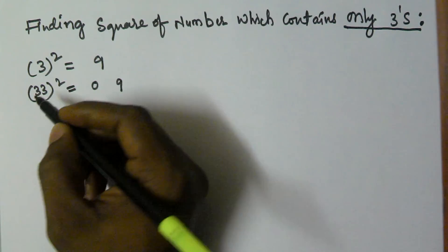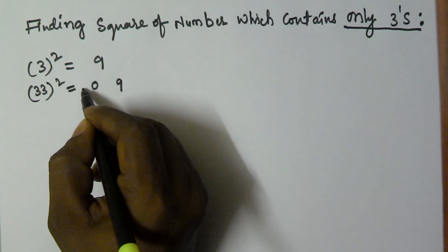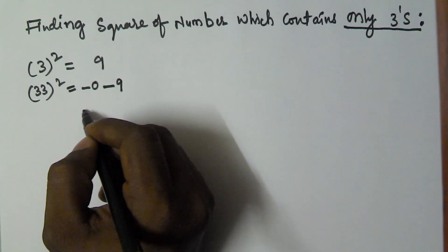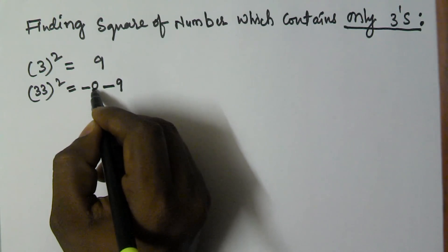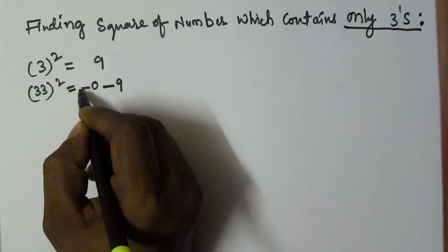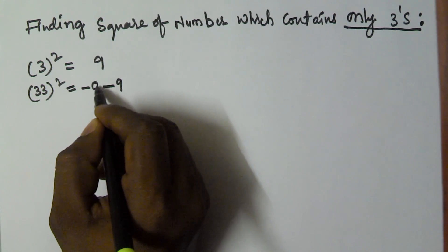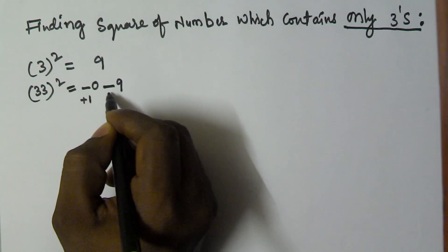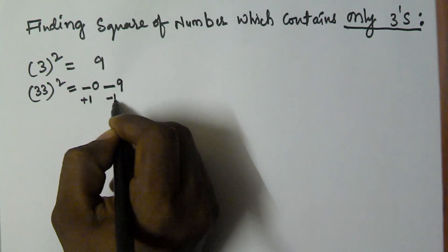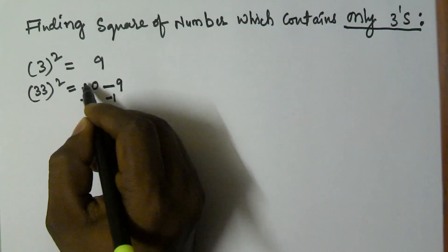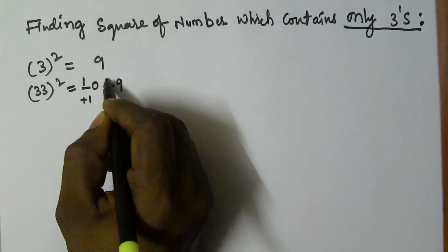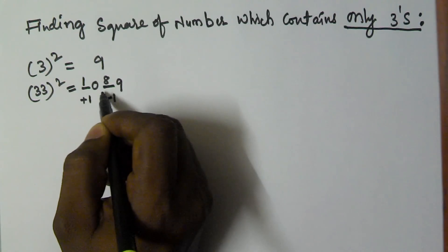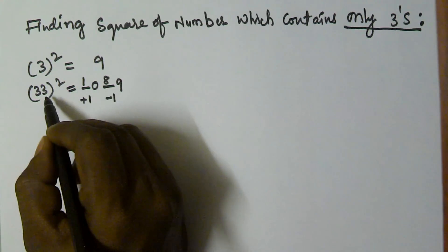It contains 2 digits, that's why we put 2 digits — 1 space before and 1 space after. In the first space increase the value by plus 1, and in the last space decrease the value by minus 1. So 0 plus 1 is 1, and 9 minus 1 is 8. So 33 squared is 1089.